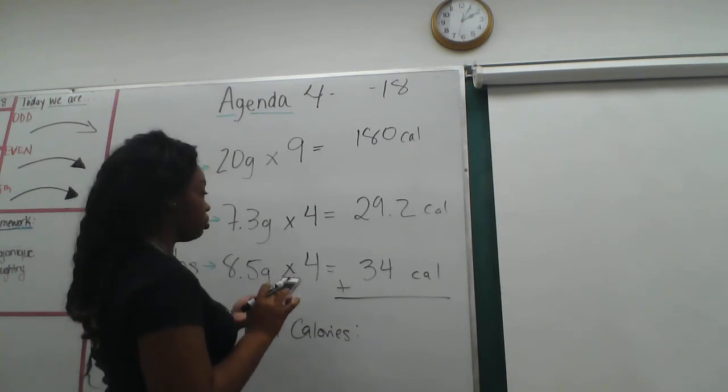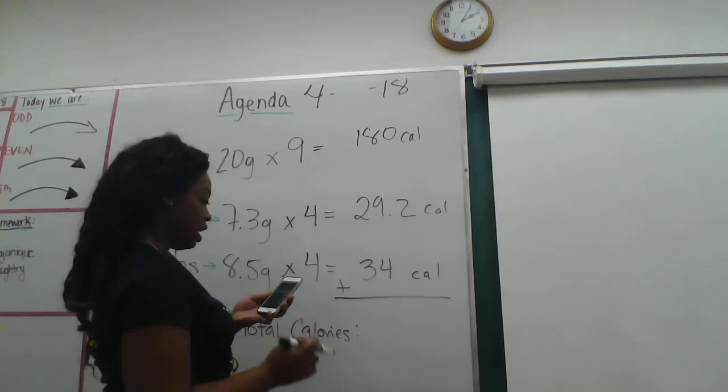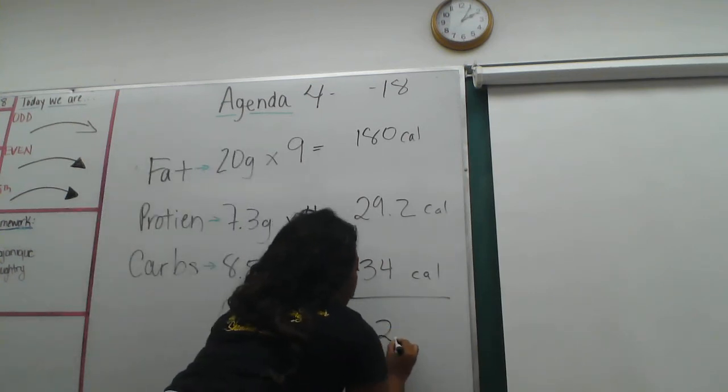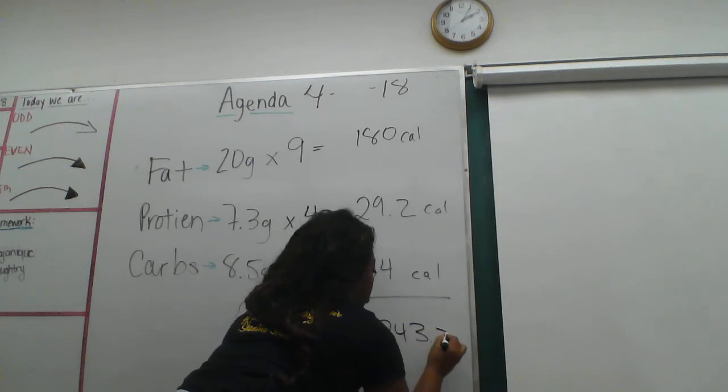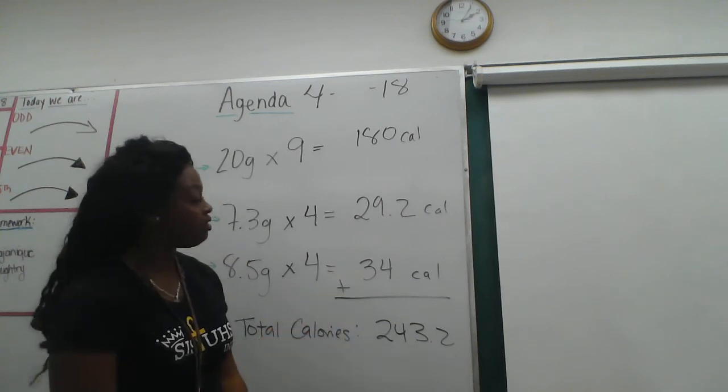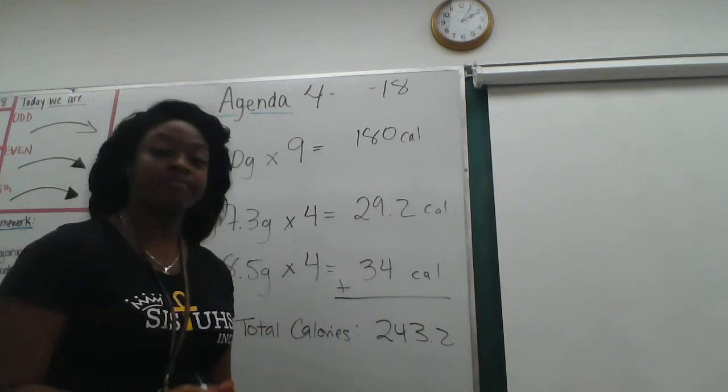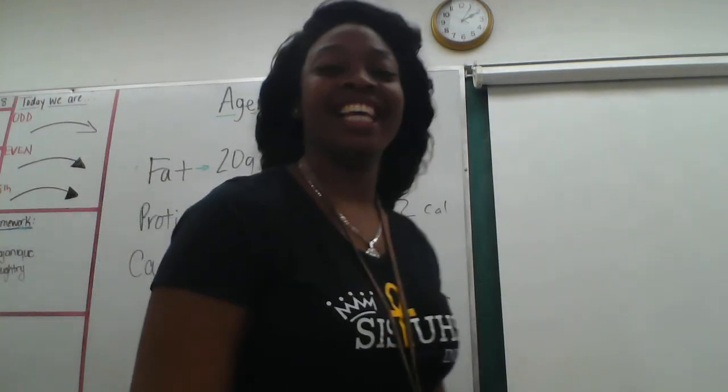So 34 plus 29.2 plus 180, and that's going to give me 243.2. That's how you get your calories from having your grams of fat, protein, and carbs.